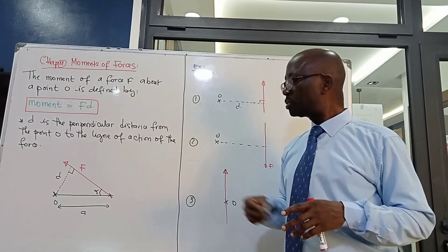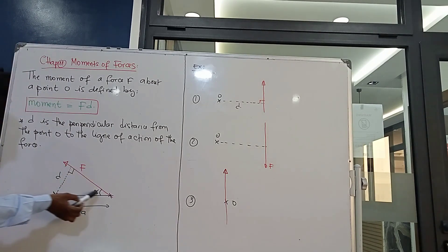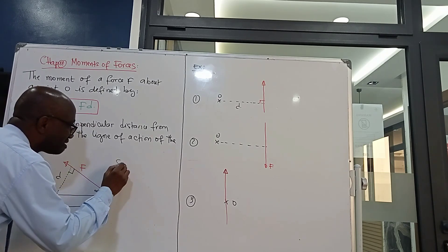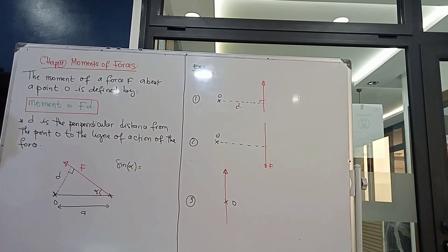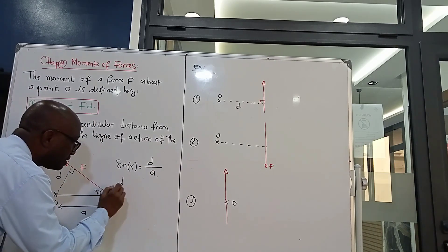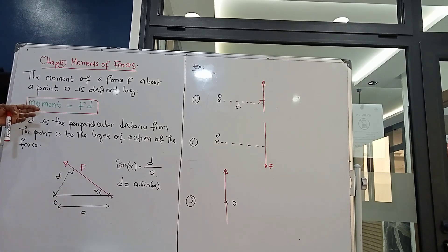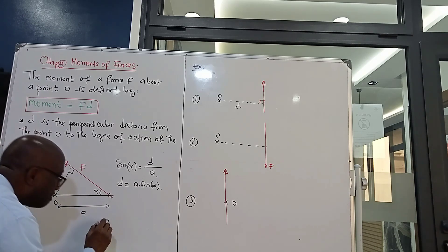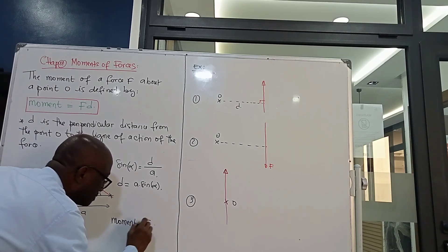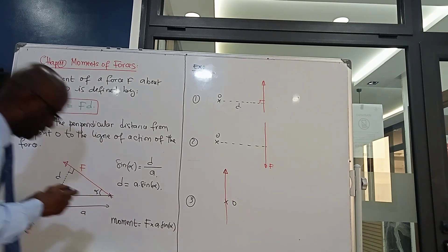Now let's calculate this value. We have a rectangular triangle here. By the definition of sine alpha, D over A equals sine alpha, so D equals A sine alpha. Using the definition of the moment — moment equals F times D — we substitute the value of D, giving us: moment equals F times A times sine alpha.